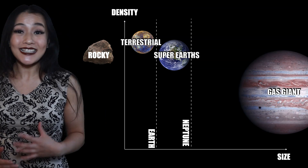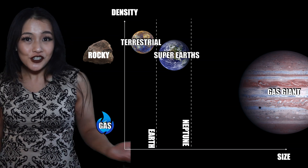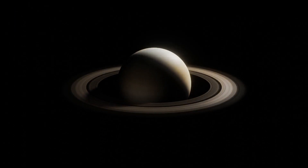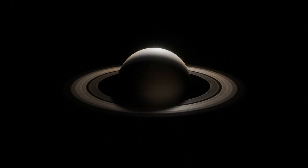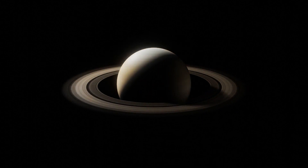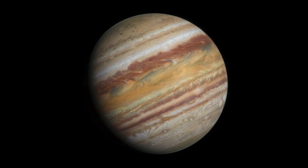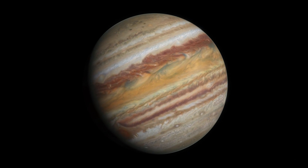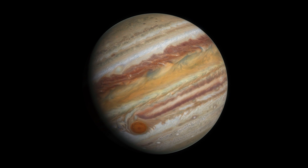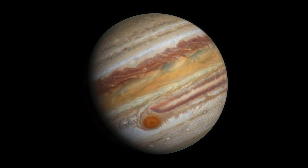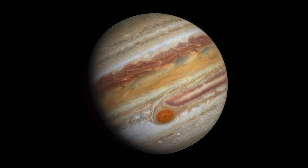Gas giants, as their name suggests, are mostly gas and, of course, giants. They are comparable in size to Saturn and Jupiter or even larger. Unlike our outer planets, most gas giant exoplanets have been hot Jupiters. These gas planets orbit close to their star where the temperatures can be extremely hot — thousands of degrees Celsius. But it's because they orbit so close to their star that we're able to find them so easily with traditional exoplanet detection methods.